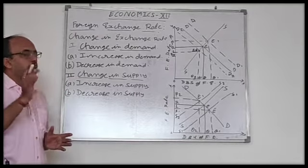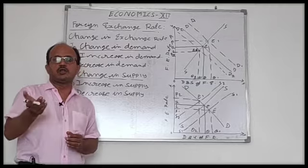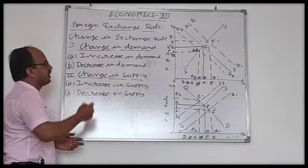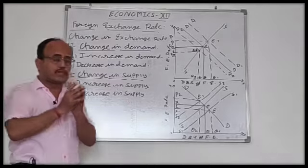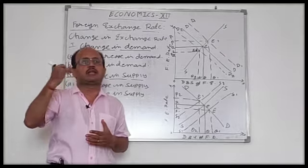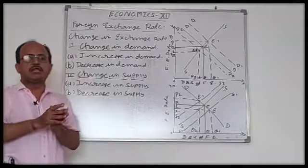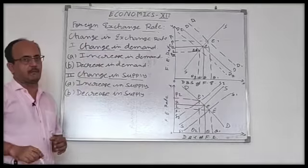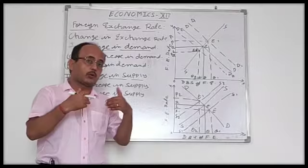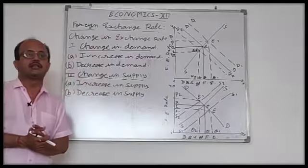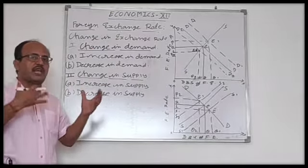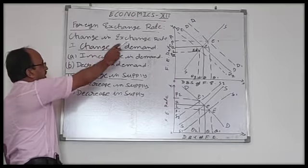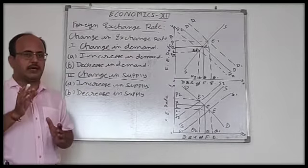In today's class we will study what happens when there is a change in demand or change in supply of foreign exchange. Our topic is 'Change in Foreign Exchange Rate.' In any country, changes in foreign exchange rate occur in three ways: from demand, from supply, and when foreign exchange rates change under a fixed exchange rate system.